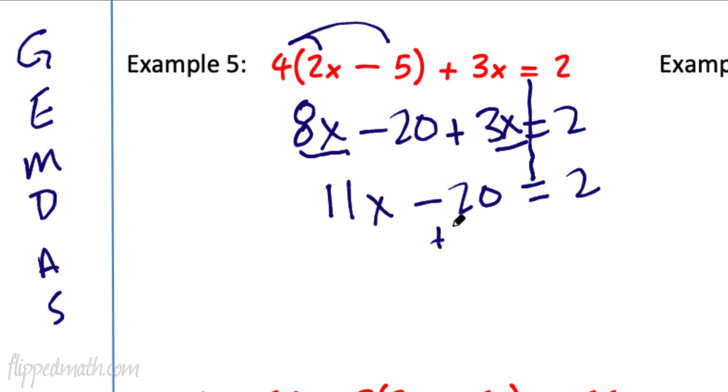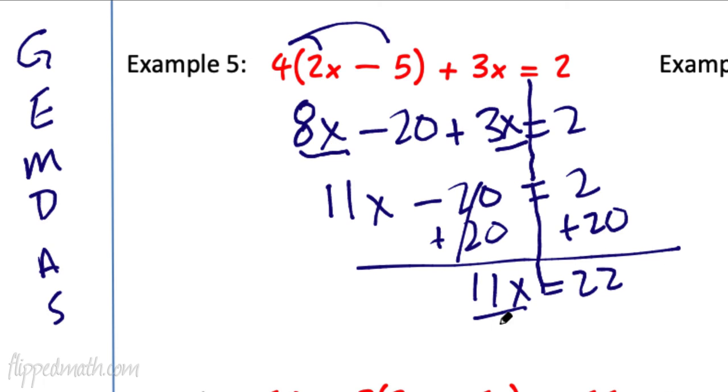All right, next, we are going to add 20 to each side. This is a two-step equation. Don't forget to write that line. Keep everything separate. They're going to cancel. We're going to get 11x is going to equal 22. When we divide by 11, I hope this fits. I'm running out of room here. x will equal 2. Boomers. How about that one?